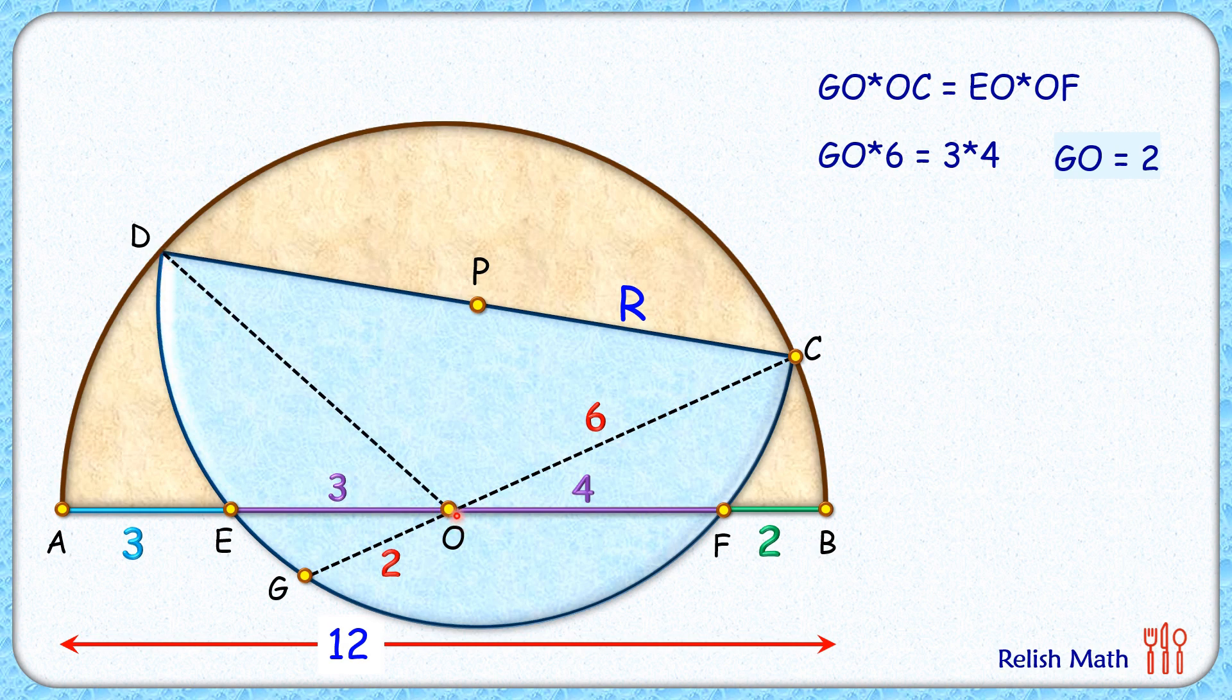Let's join DO here. What is length of DO? Again this is radius of brown semicircle and thus 6 cm. Let's join DG. So with respect to blue semicircle, DC is the diameter. We know diameter always subtends an angle of 90 degrees. So angle G is 90 degrees.